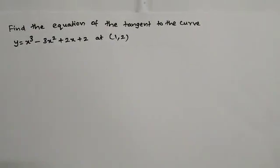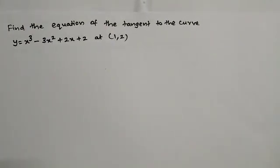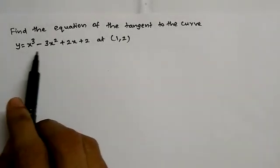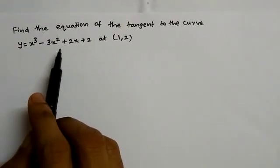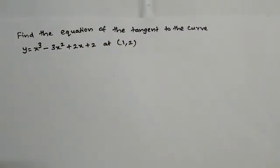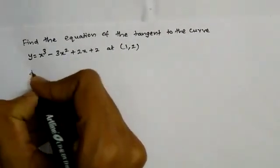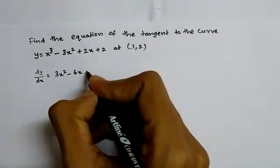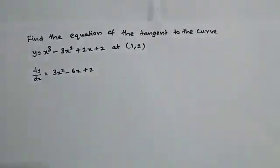First question: find the equation of the tangent to the curve y equals x cubed minus 3x squared plus 2x plus 2 at the point (1, 2). The equation is y equals x cubed minus 3x squared plus 2x plus 2. We have dy by dx equals 3x squared minus 6x plus 2.